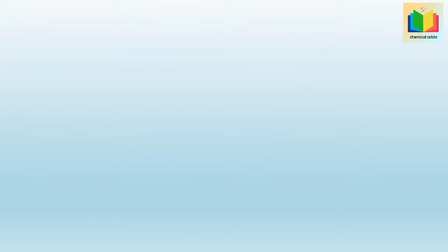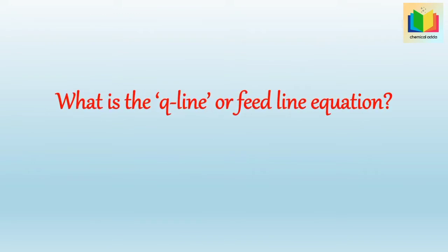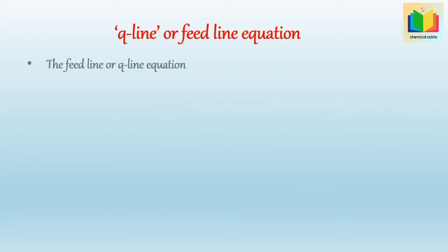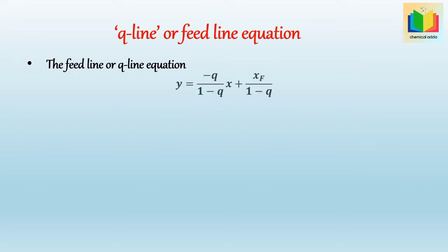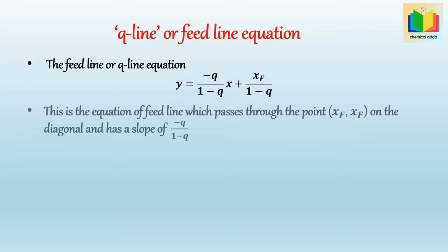What is the q-line or feed line equation? The feed line or q-line equation is: y = −q/(1−q) · x + xf/(1−q). This is the equation of the feed line, which passes through the point (xf, xf) on the diagonal and has a slope of −q/(1−q).